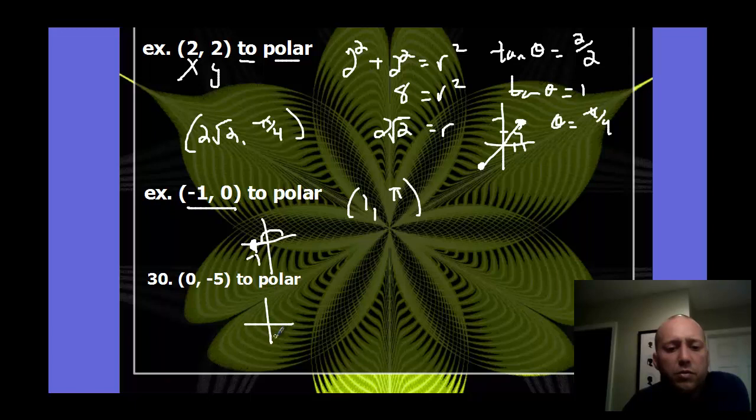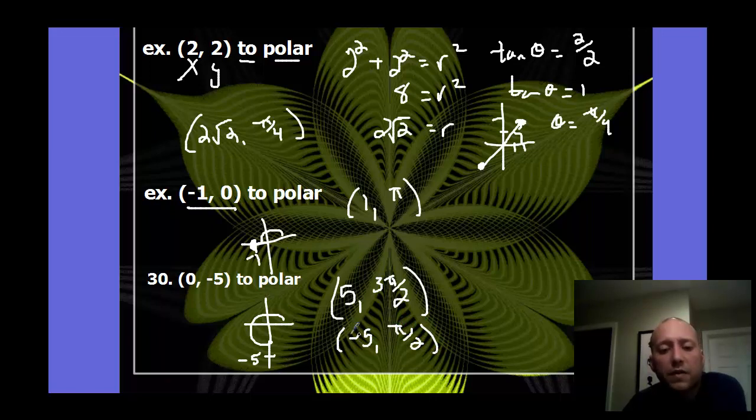So this one down here is similar. 0, negative 5. For that one, it has a distance of 5. And it has an angle of 270 or 3 pi halves. So you can write that point. You could write this the same thing as negative 5 comma pi halves. It's the same thing because a negative 5 means go opposite direction from the pi halves theta. So that's how to convert points back and forth between polar and rectangular.